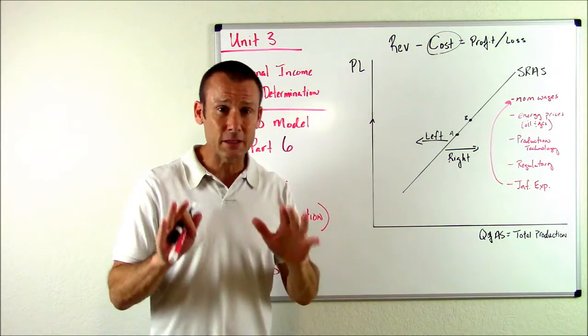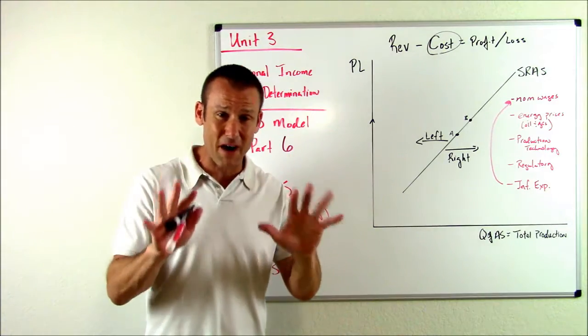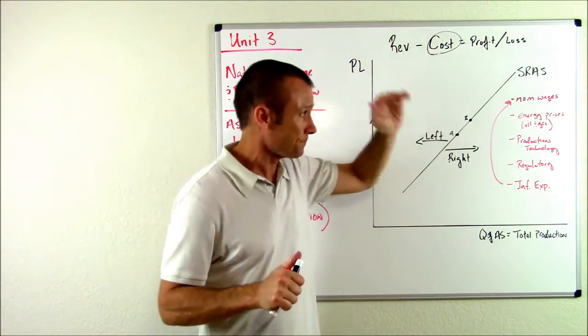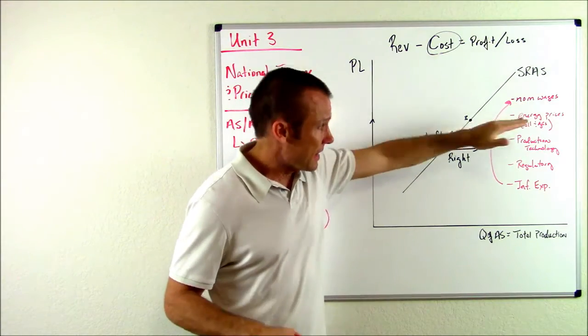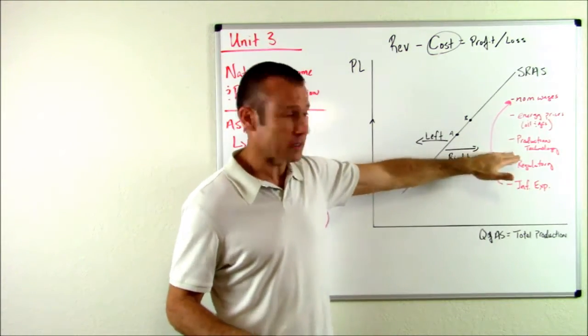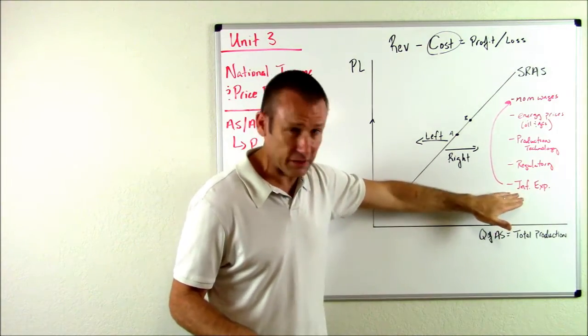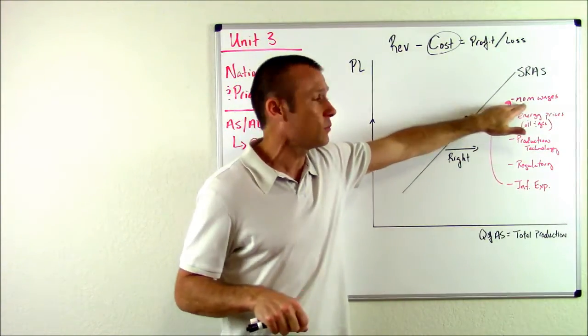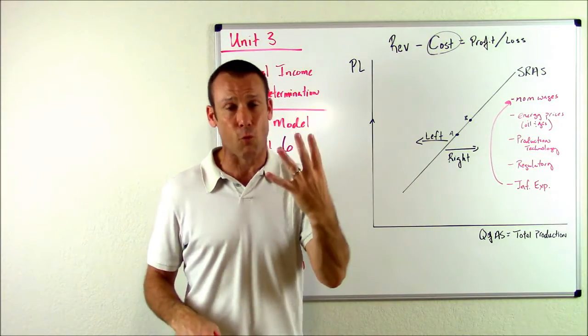So there they are. That's it. It's a pretty simple list. There's only five things we really have to know that are going to shift the SRAS curve. Nominal wages, energy prices, production technology, our regulatory environment, and then inflationary expectations. And remember, inflationary expectations is really redundant with the first one. So it's kind of like we only need to know four things.